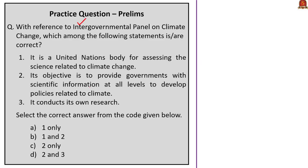This question is with reference to the Intergovernmental Panel on Climate Change (IPCC). Three statements are given. The first statement: IPCC is a United Nations body that assesses science related to climate change — correct. The second statement: its objective is to provide governments with scientific information at all levels to develop policies at national and sub-national level related to climate — also correct.